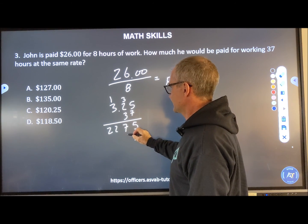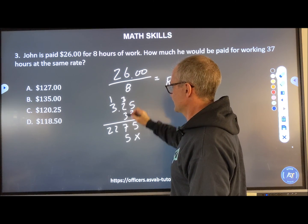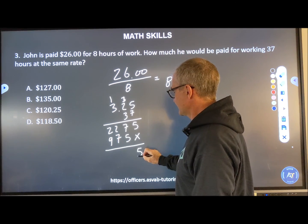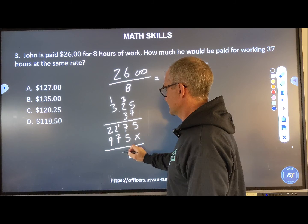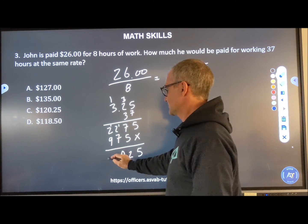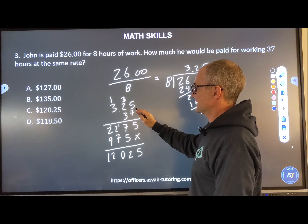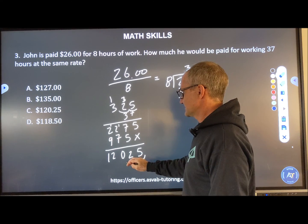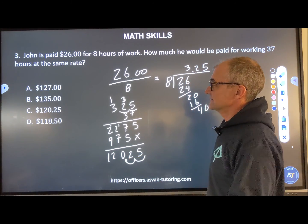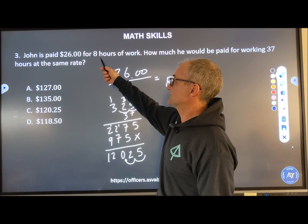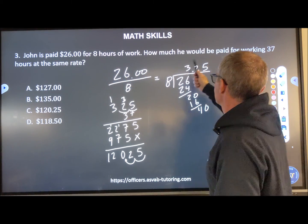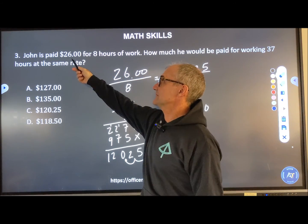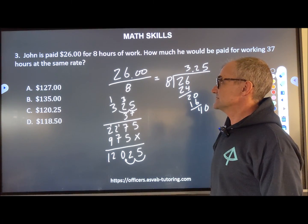I do long multiplication: 7 times 5 is 35, carry the 3; that gives me 22, carry the 1; then with a placeholder, 3 times 5 is 15, carry the 1; 6 plus 1 is 7; 3 times 3 is 9. Adding down: 5, then 12, carry 1, then 10, carry 1, giving me 12. I have two decimal places, so I bring my decimal over two places and get $120.25. That makes sense — 26 bucks for 8 hours means 37 hours should be roughly 4-5 times that amount, which it is.